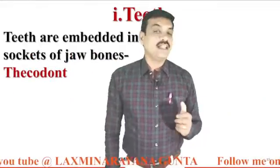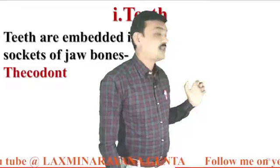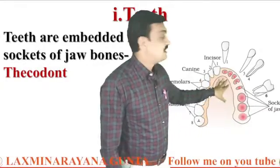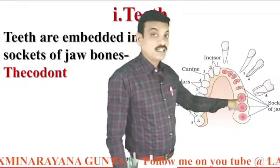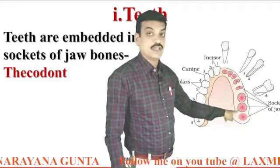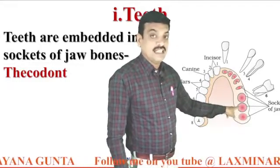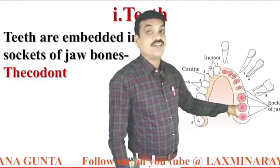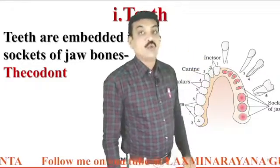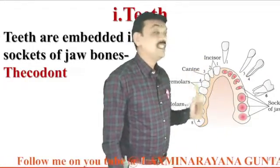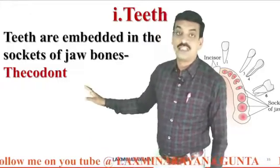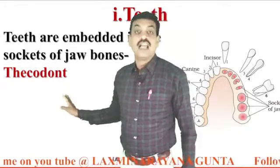Human teeth are embedded in the sockets of the jawbone. You can observe these are the teeth and these are the sockets — our teeth are embedded in these sockets. That's why human teeth are called as thecodont teeth.